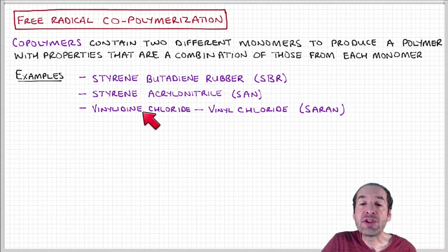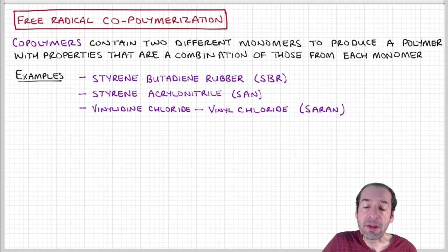Styrene acrylonitrile and vinylidene chloride vinyl chloride, which you might be familiar with under the trade name Saran, are other examples of commercial copolymers.